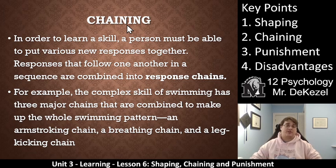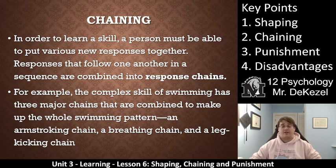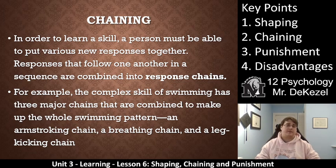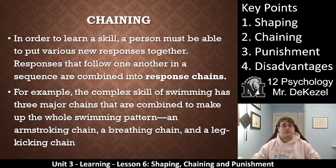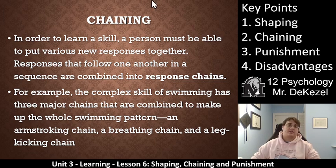Chaining is: in order to learn a skill, a person must be able to put various new responses together — responses that follow one another in a sequence and are combined into a response chain. An example would be the complex skill of swimming. There are three major things that you need to do while swimming: you need to move your arms, you need to move your legs, and you need to be breathing. These are all chains and they need to work together. They can't interfere with one another — these motions and movements all need to be fluid and optimized to get you to move as fast through the water as possible. So chaining is learning a bunch of different actions and using them together, maybe in order, maybe all at the same time.